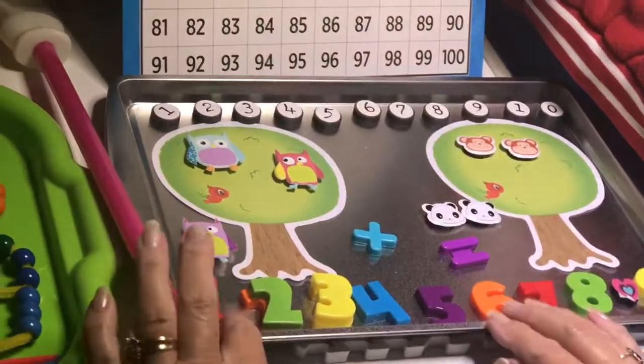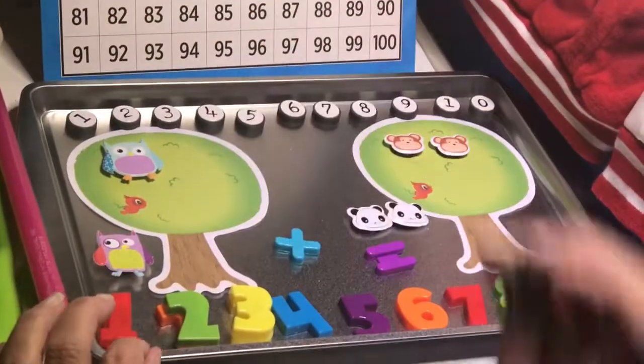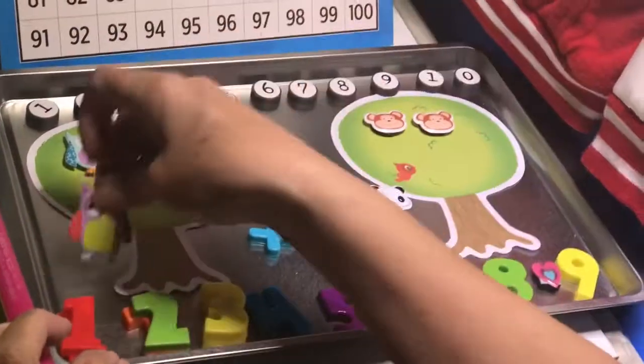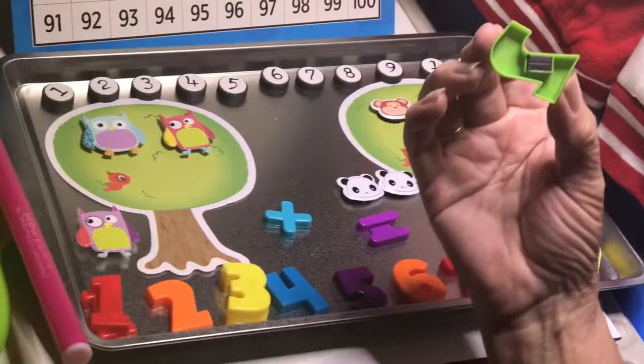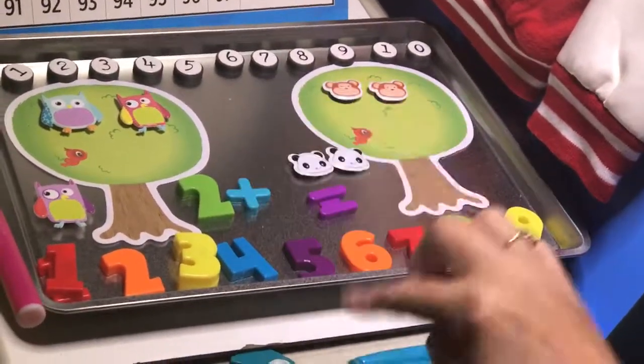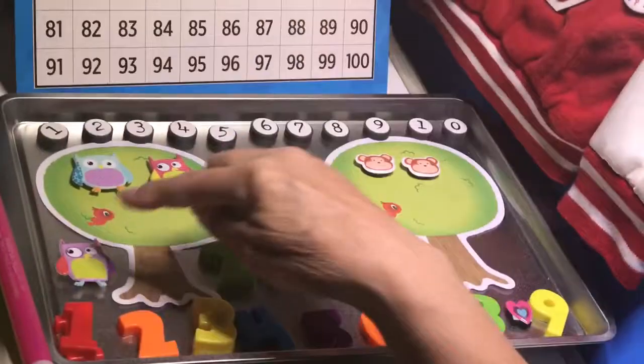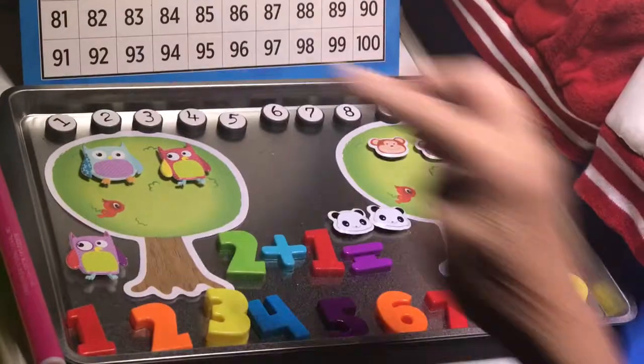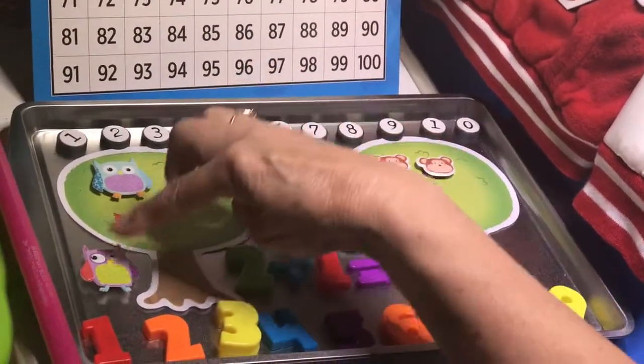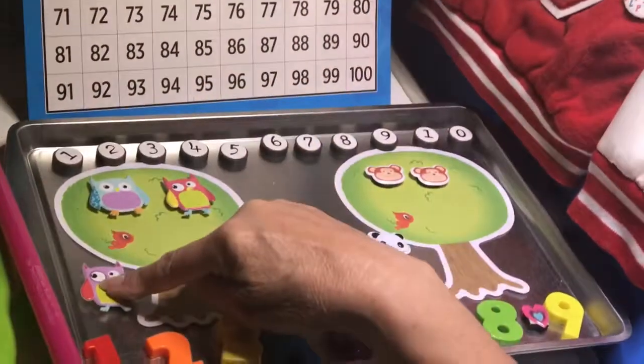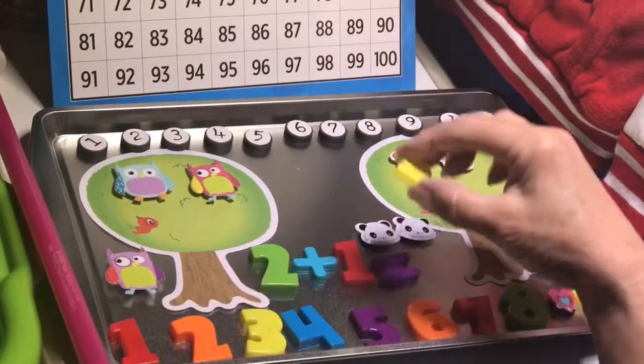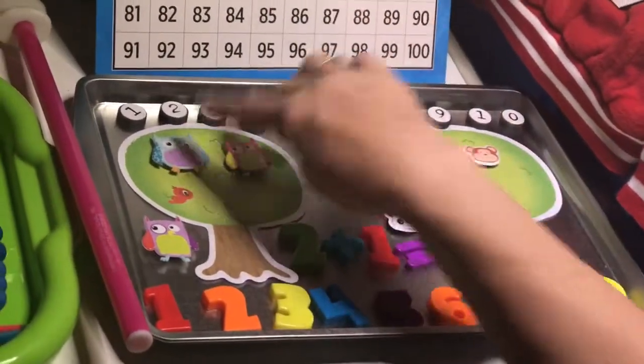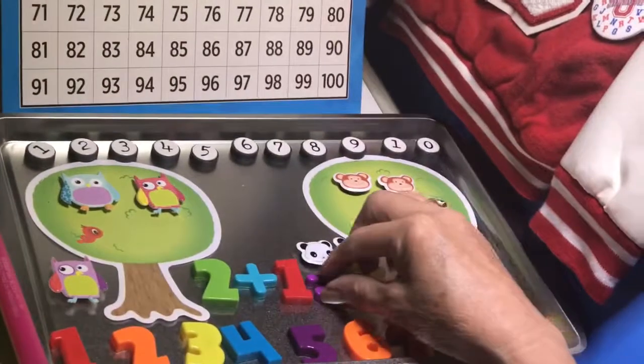You can get this cookie sheet for a dollar at Dollar Deals or the Dollar Store. If I have two owls in the tree and one owl down here. Two owls in the tree plus, remember you can make a plus like this with your finger, plus one owl on the ground. Two plus one equals, that means how many is it? Let's count them. One, two, three. Two owls plus one owl equals three owls. You just did addition. Clap for yourself.